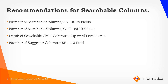Here are some recommendations for search-enabled columns. The number of searchable columns per business entity should not exceed 10 to 15. There is a hard limit of 50 columns, but we strongly recommend not going beyond 10 to 15 per business entity. The number of searchable columns per ORS should ideally not exceed 80 to 100. The depth of searchable child columns should be up until the third or fourth level — going beyond that has caused major performance issues and unexpected errors during indexing. The number of suggester-enabled columns per business entity should not exceed one or two, and ensure these do not hold sensitive data.